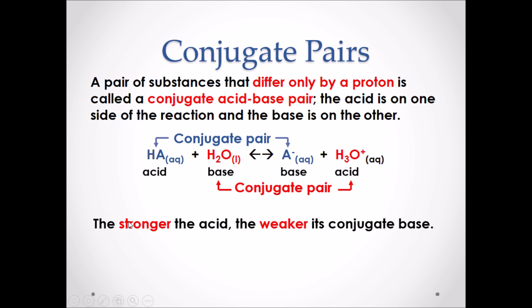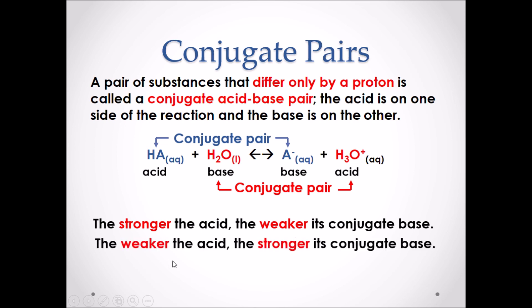It is important to note: the stronger the acid, the weaker its conjugate base will be. So if HA is a very strong acid, that means its conjugate base A- will be very weak. And the opposite is true: the weaker the acid, the stronger its conjugate base will be.